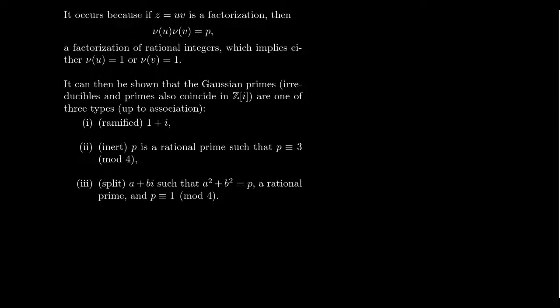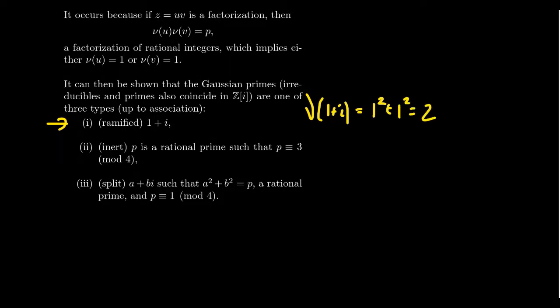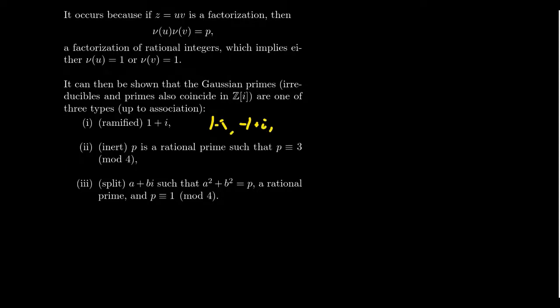In the ring of Gaussian integers, there are three types of Gaussian primes — three different families, up to association. The first is called the ramified family. For example, 1 + i has norm 1² + 1² = 2, which is a rational prime, so 1 + i is a Gaussian prime. This family also includes 1 - i, -1 + i, and -1 - i.